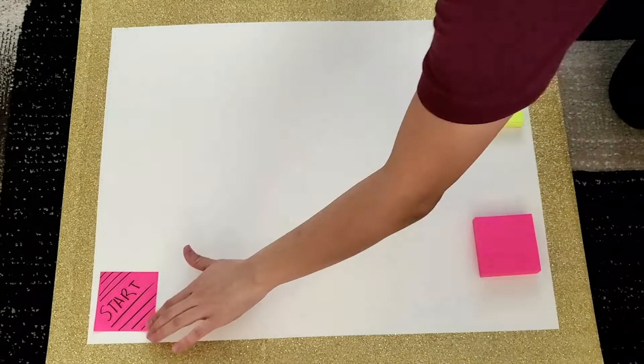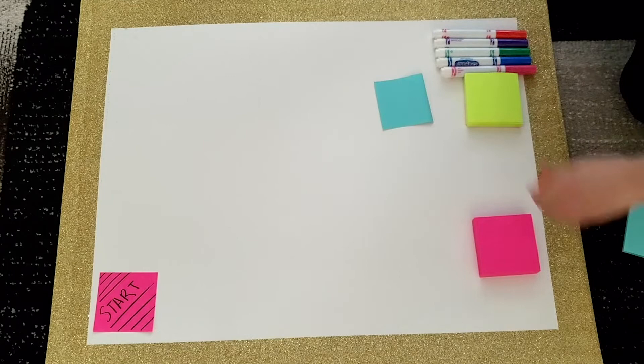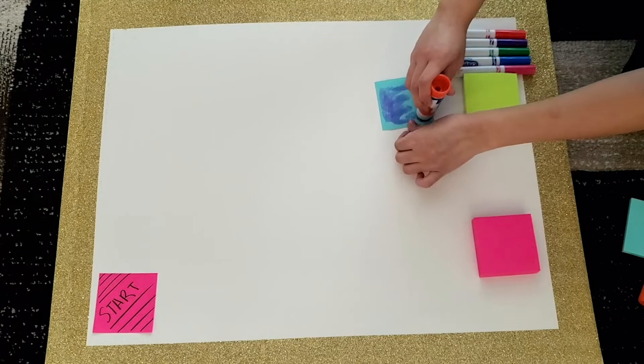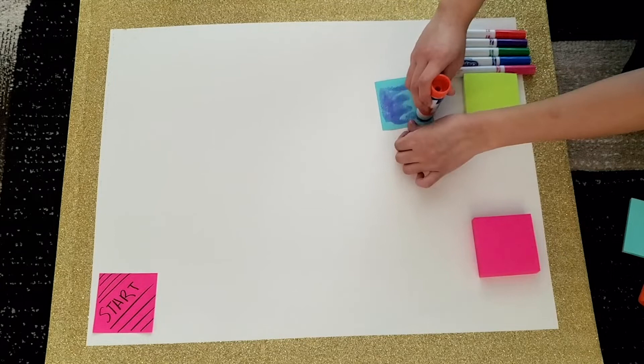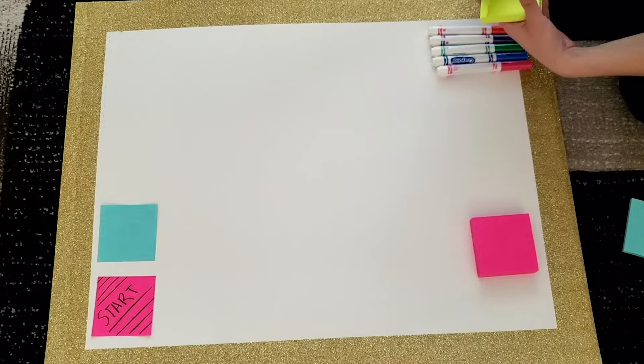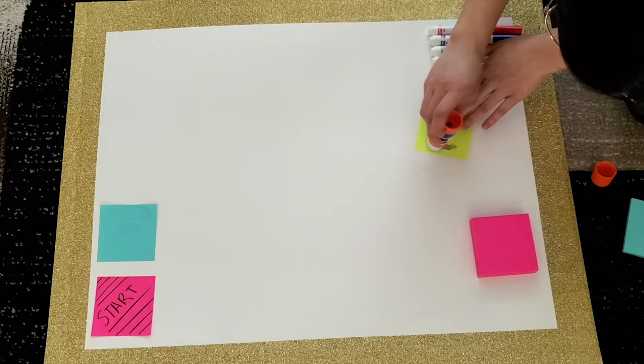And then I'm going to be grabbing the next color post-it note, the blue one. And then for this one, I'm just going to leave it blank for right now. We can always decorate it and write on top of it later. I just want to make sure that I have all of the post-it notes glued onto the construction board so that way we don't have to worry about it later on. And then the same thing with the green post-it note, we're going to take that one, glue the back of it with the glue stick, and then make sure it does actually stick onto the construction board.